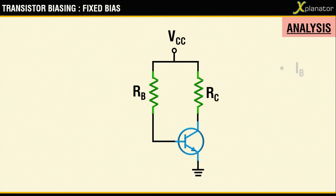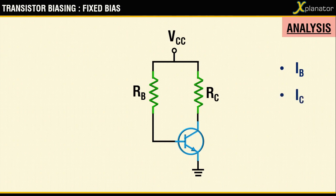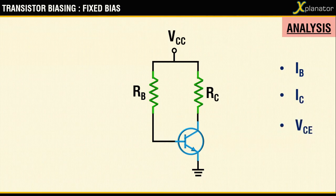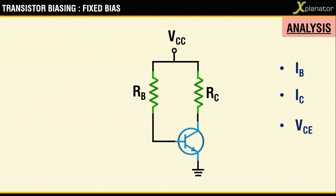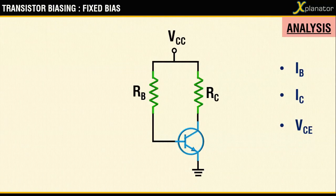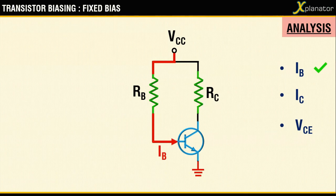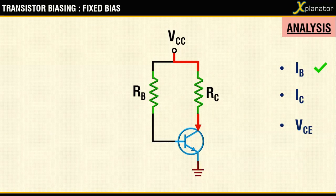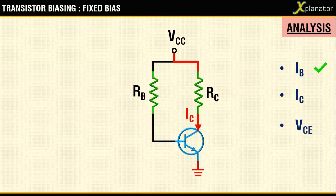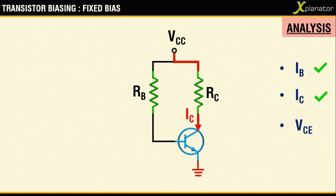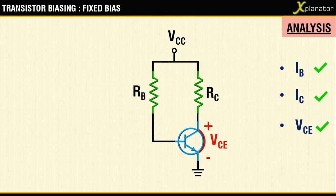Talking of analysis, we will have to identify three parameters: one base current, one collector current, and the third is going to be the voltage across collector-emitter terminals. As this is a closed circuit, there will be a flow of current in it. The current which flows to the base resistor is called IB, that's the base current. The current that flows through the collector resistance is called IC, and the voltage that appears across the collector-emitter terminals is called VCE. By analysis, we mean finding out the value for these three parameters.